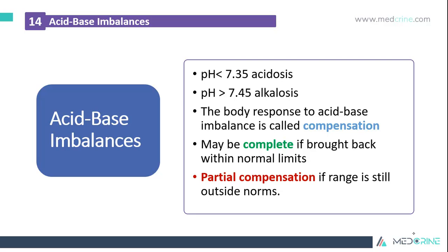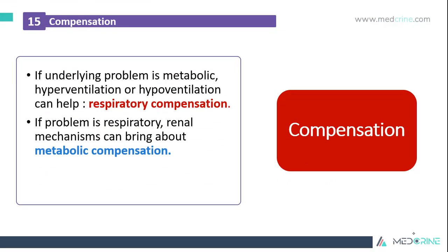An acid-base imbalance occurs whenever you have a pH of less than 7.35 in blood, which is called acidosis, and a pH of greater than 7.45 is known as alkalosis. The body's response to each of these acid-base imbalances is called compensation. Compensation may be complete if it brings back the pH into normal limits, or it can be partial compensation if the range still falls outside the normal. If the underlying problem is metabolic in nature, hyperventilation or hypoventilation can help, and this is known as respiratory compensation. On the other hand, if the problem is respiratory, the renal mechanism can bring about metabolic compensation.